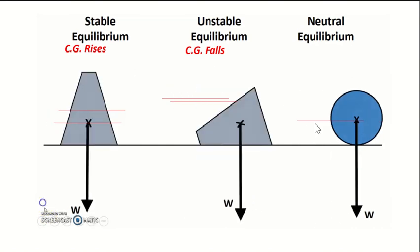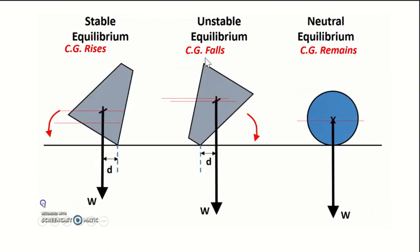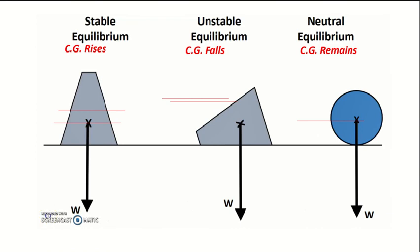The CG is actually on the same part of the object, but due to the nature, the position of the object, it actually causes it to shift the position down a little bit. What about for neutral equilibrium? You can see for neutral equilibrium it actually maintains at the same position. So this is just a summary: CG rises, CG falls, and CG remains.